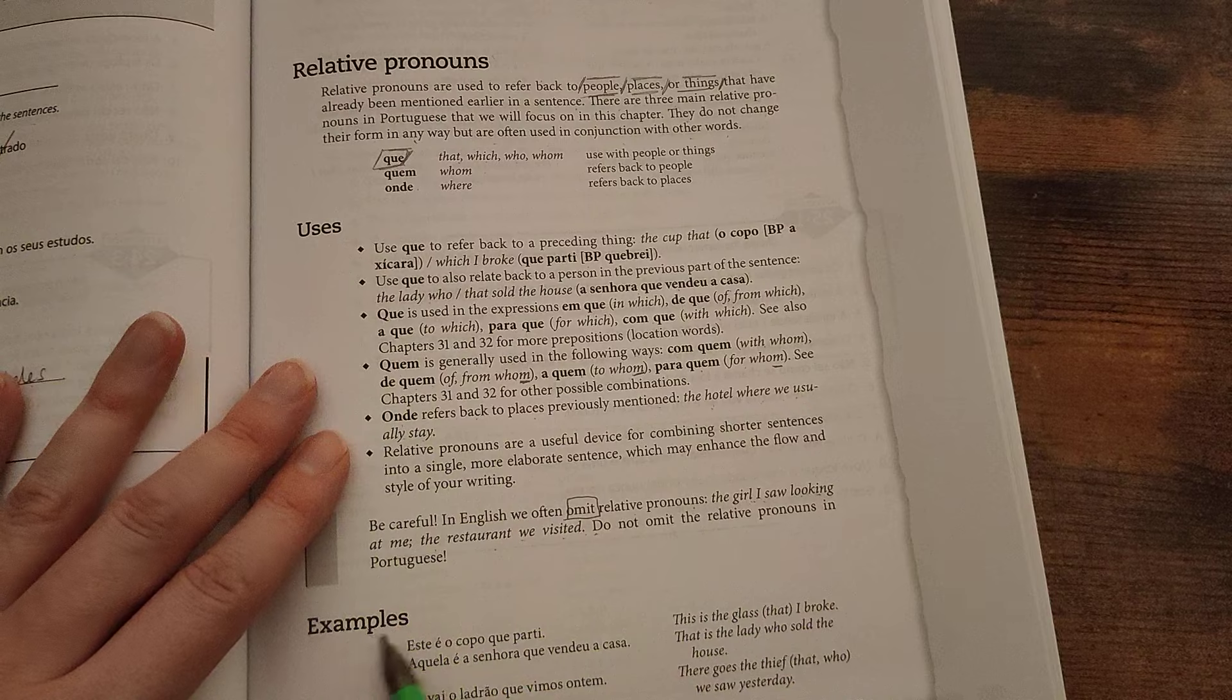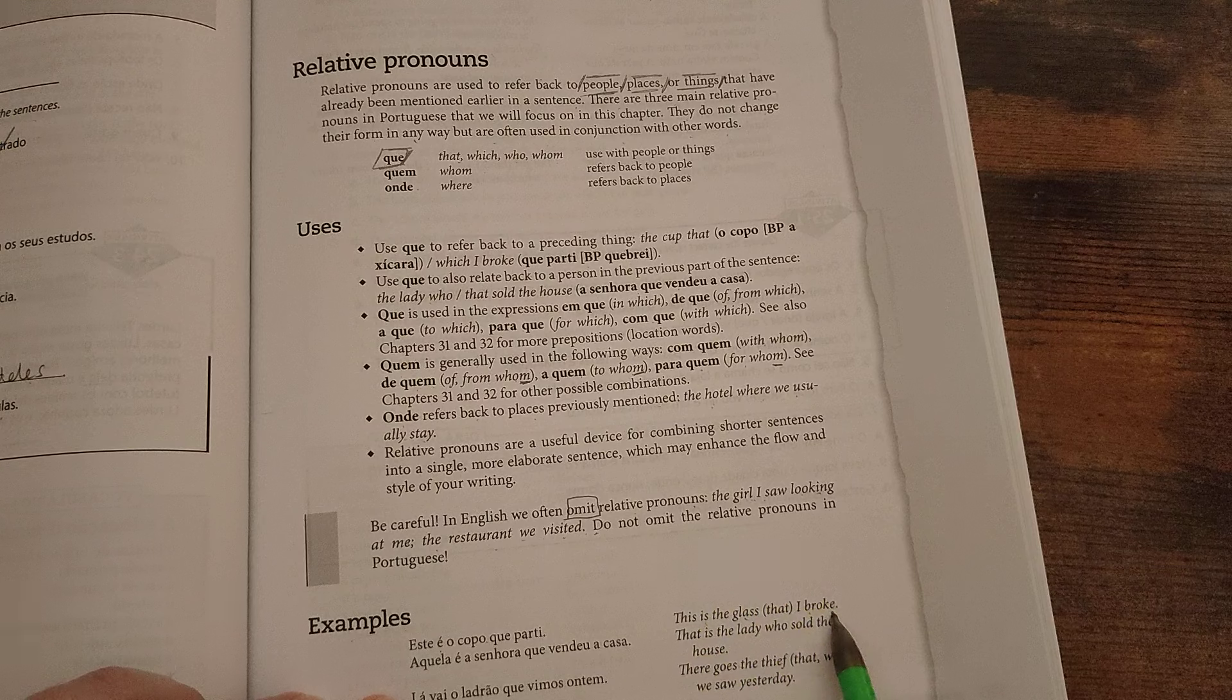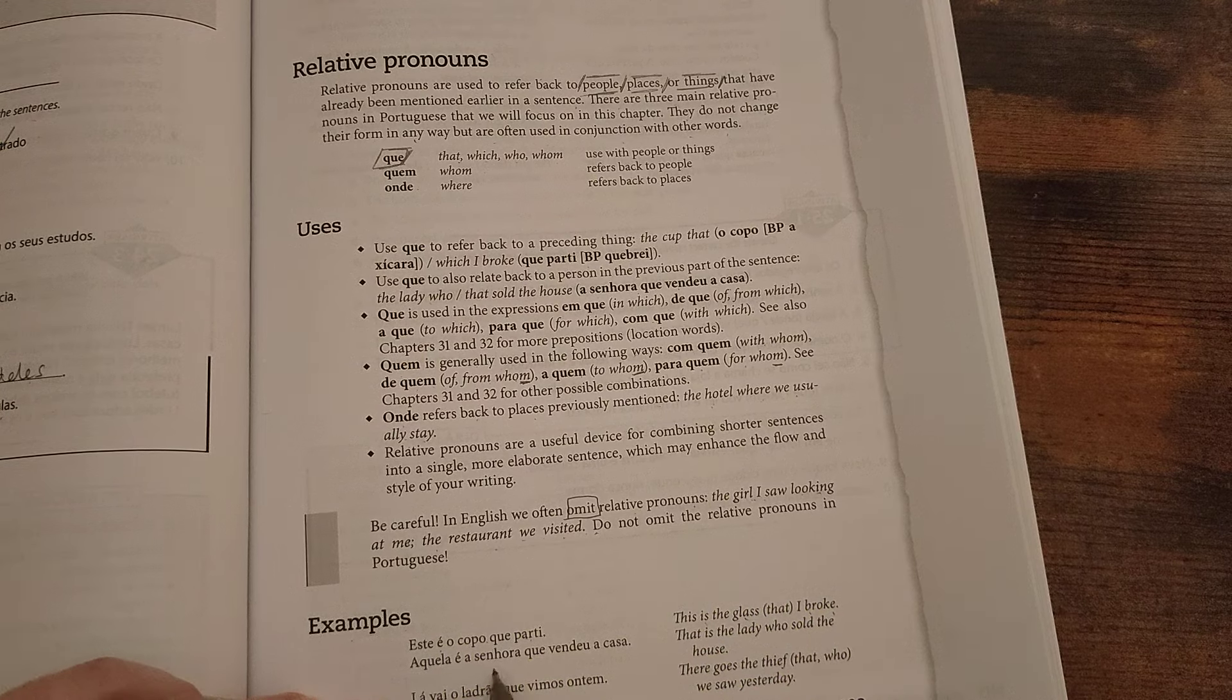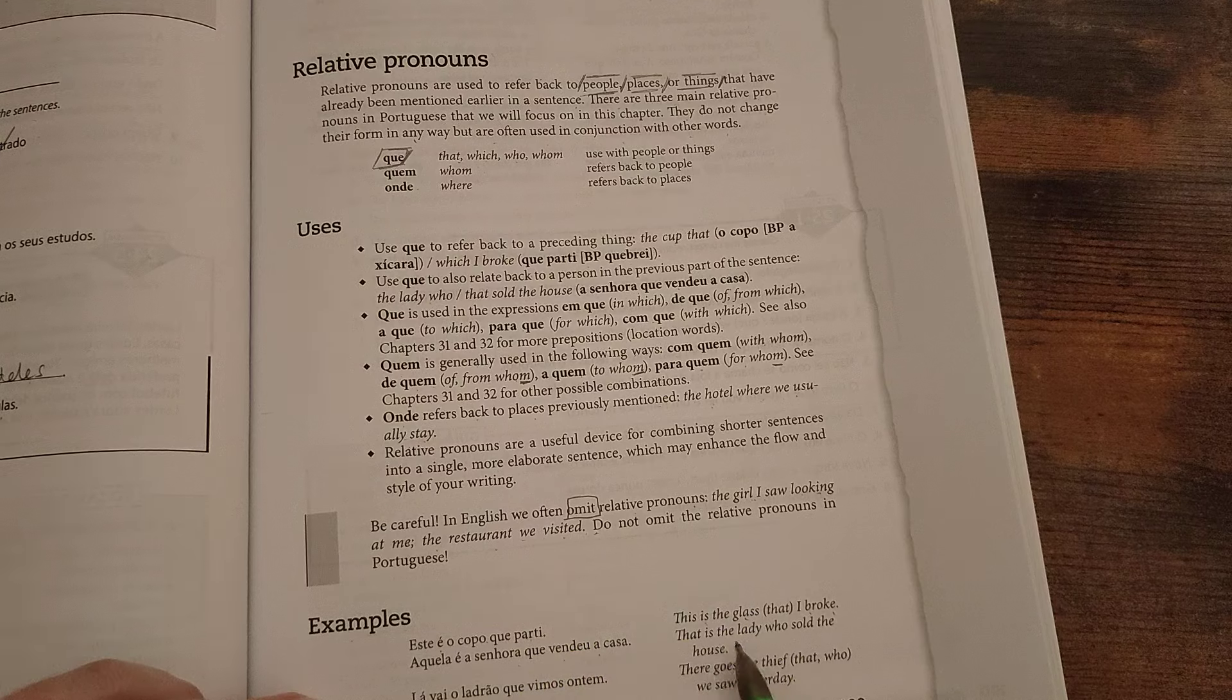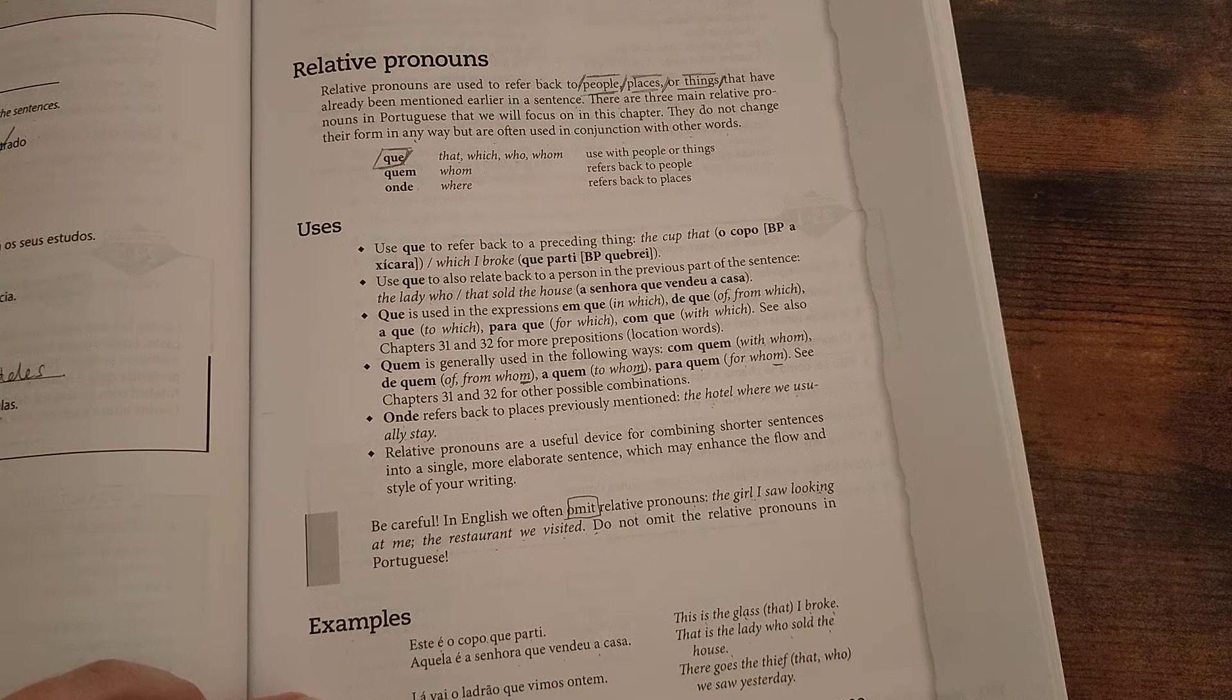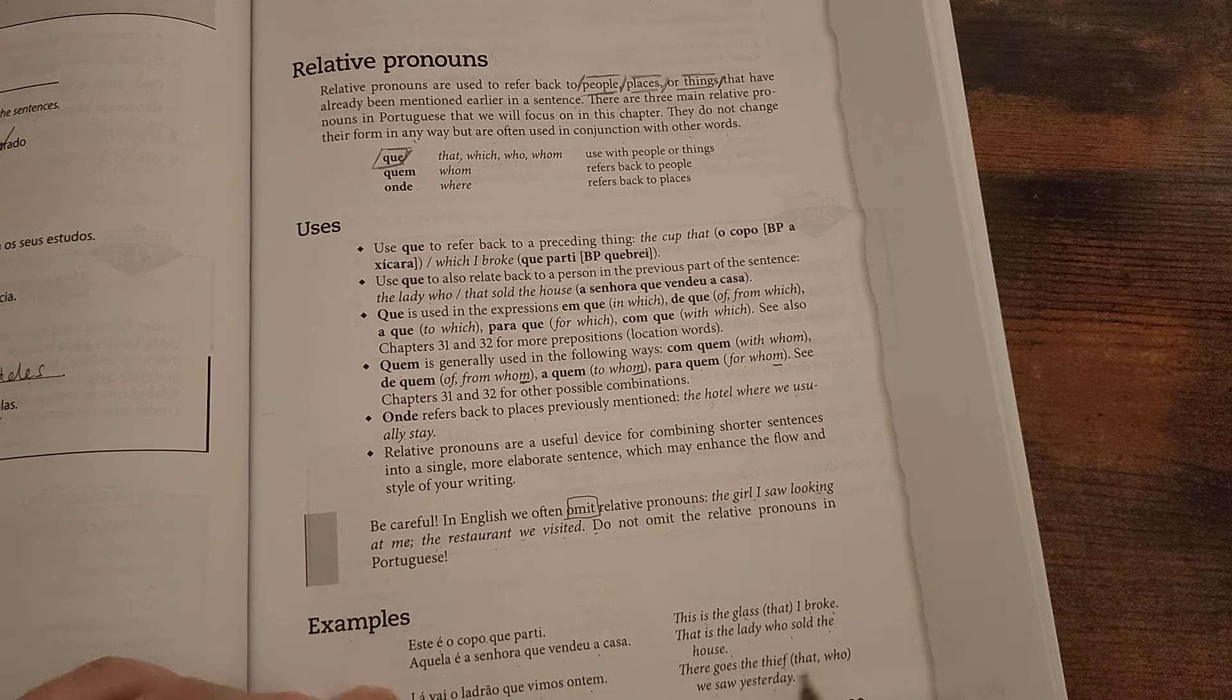Ok, examples. Este é o copo que parti. This is the glass that I broke. Ou este é a xícara que quebrei. Aquela é a senhora que vendeu a casa. That is the lady who sold the house. Lá vai o ladrão que vimos ontem. There goes the thief who we saw yesterday.